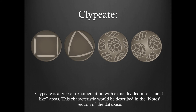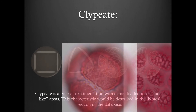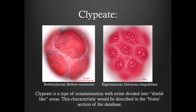Clypeate is a type of ornamentation with the exine divided into shield-like areas. This characteristic would be described in the notes section of the database. Here are a few examples.